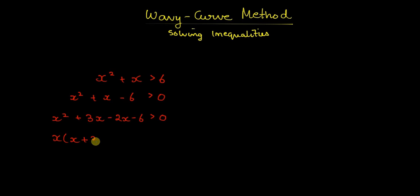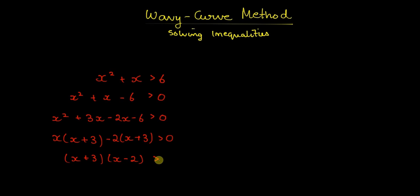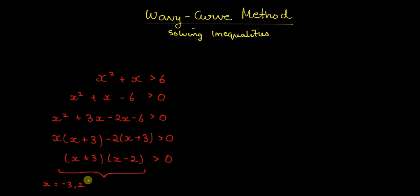This factors as x(x+3) minus 2(x+3) greater than 0, or (x+3)(x-2) greater than 0. From this expression we gather that it will equal 0 when x equals minus 3 or x equals 2.